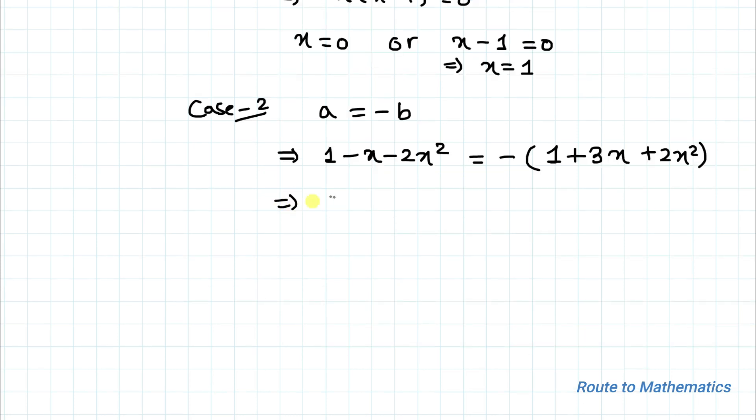This implies 1 - x - 2x². Now by opening the bracket, we have -1 - 3x - 2x².